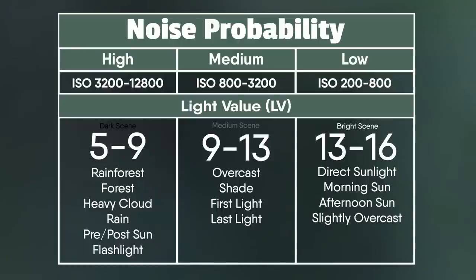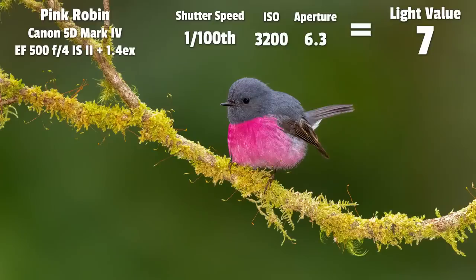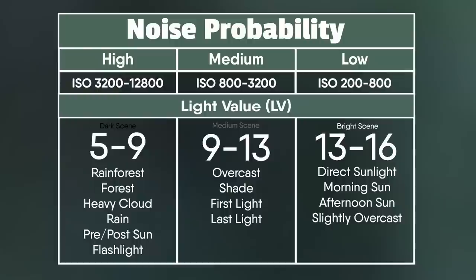Let's have a look at this diagram I've created, which relates to the probability of getting noise in your images. You're most likely to get noise when you have a very dark scene such as in the rainforest or with heavy cloud. These scenarios typically have a light value of between 5 and 9, which means you will likely be using very high ISOs such as 3200 to even 12,800. It's almost impossible to avoid noise in these situations.